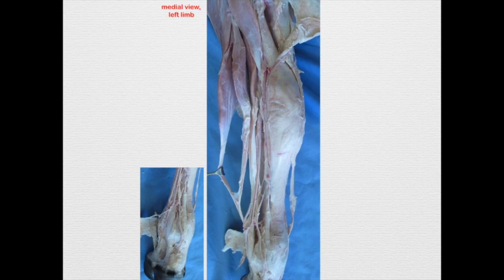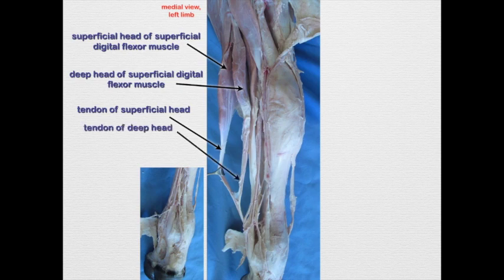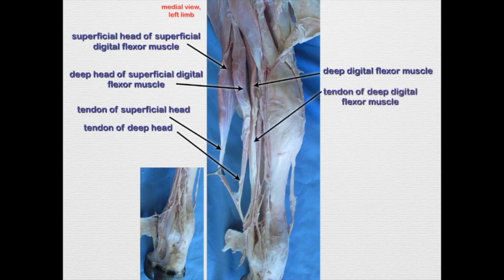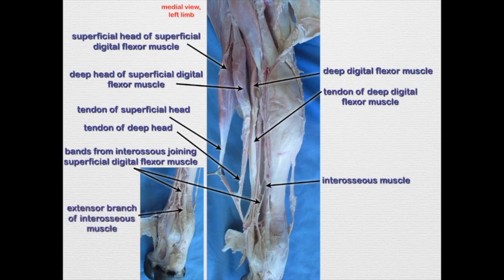Something a little different in the bovine is that the superficial digital flexor muscle has two heads — a superficial and a deep head — and their tendons come together. The deep digital flexor muscle bellies and tendon are visible here. Here we see the interosseous muscle — it is a muscle in the bovine. It's going to send a band that goes palmarly and attaches to the superficial digital flexor muscle. There are also extensor branches, just like in the horse.